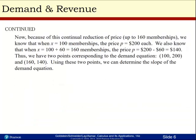Because of this continual reduction of price up to 160 memberships, we know that when x equals 100 memberships, the price p equals $200 each. We also know that when x equals 100 plus 60 memberships, the price p equals 200 minus 60, which is $140. Thus, we have two points corresponding to the demand equation: 100 comma 200 for the first point and 160 comma 140 for the second point.